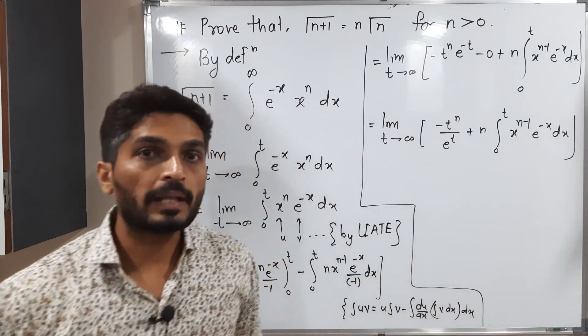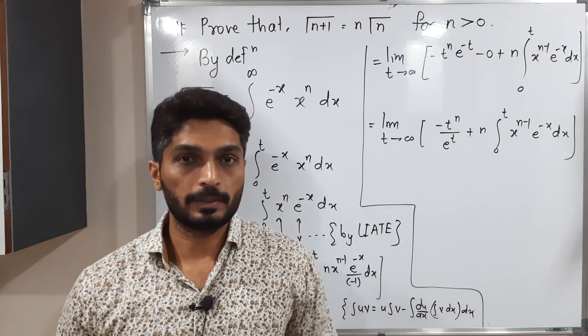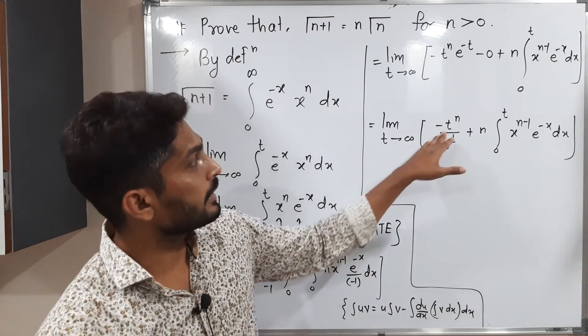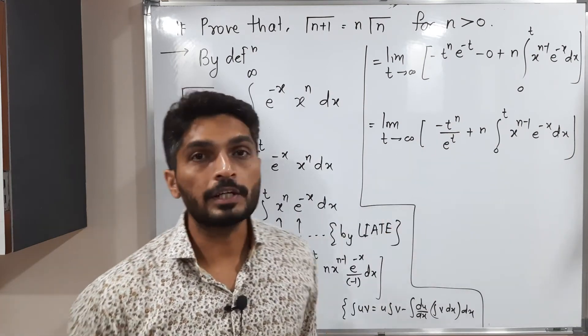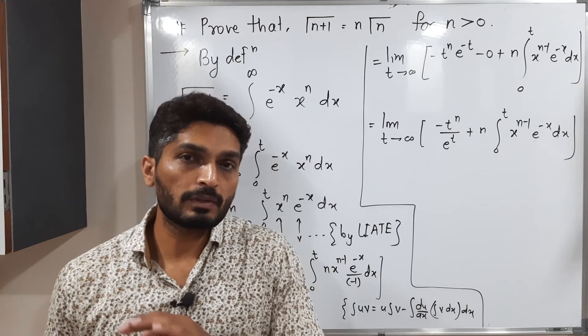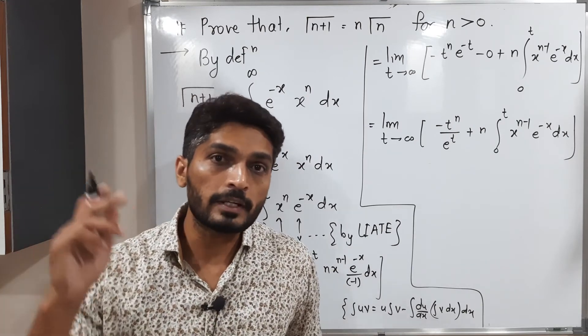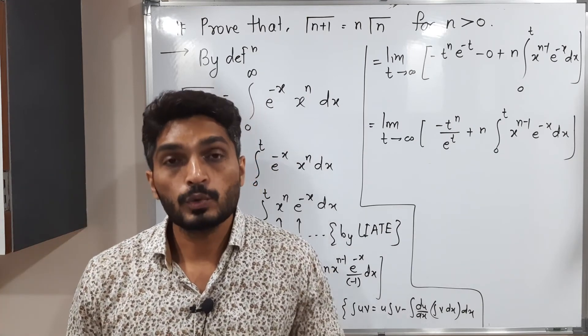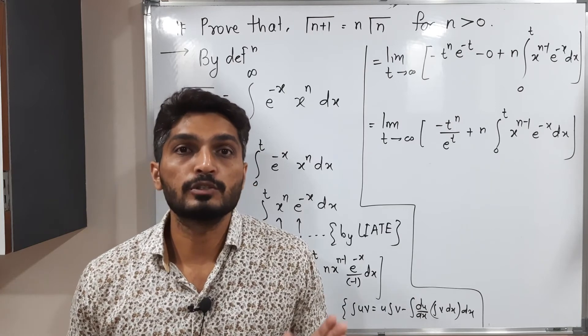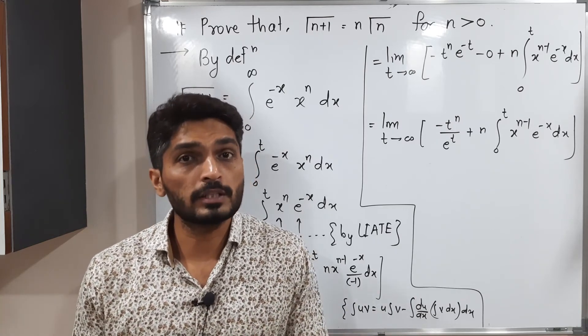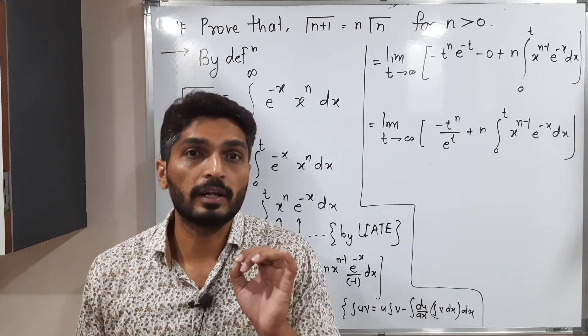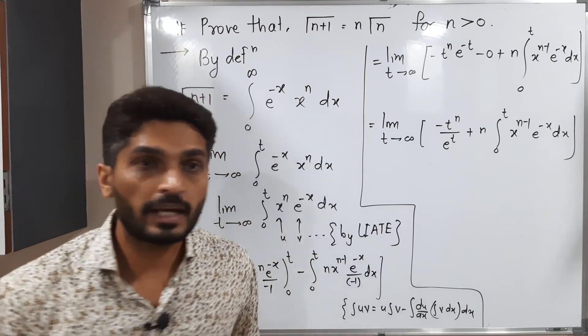So now I am applying the limit t tends to infinity. So if I put here t equals infinity, we will have infinity at the numerator as well as we will have infinity at the denominator. So that means when we apply the limit we will have infinity upon infinity form, so we're supposed to use L'Hospital's rule. So I am not going to solve it in detail, but by L'Hospital's rule, by solving it we are getting a value 0.